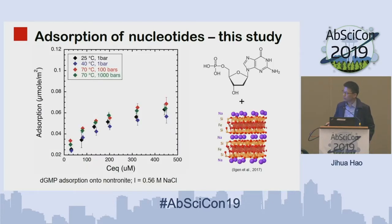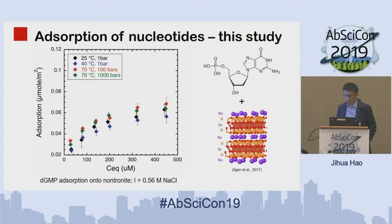Here are the results. The x-axis is the equilibrium concentration of nucleotides after absorption, and the y-axis is the amount of nucleotide absorbed. With temperature changing from 25°C to 70°C and pressure from 1 bar to 1,000 bars, there is no big change in absorption. Although there may be a slight change, given the large error bars, that is likely within systematic uncertainty.